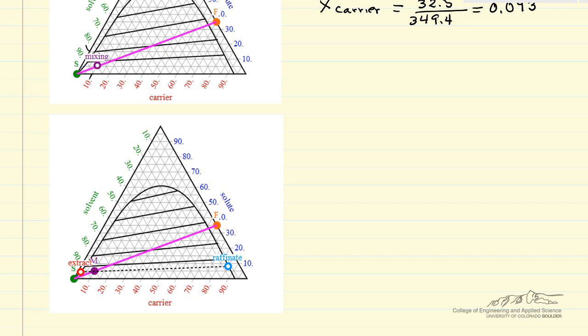So if we look at the raffinate, and the mass fraction of solute, it looks like, if I look here, here's 10%, so it's less than 10%, I'm going to estimate that 8%, or a fraction of 0.08, and then the carrier mass fraction, so it looks almost right on the line, 85%, or a mass fraction of 0.85, and that means the mass fraction of the solvent is 0.07, since the fractions have to add up to 1.